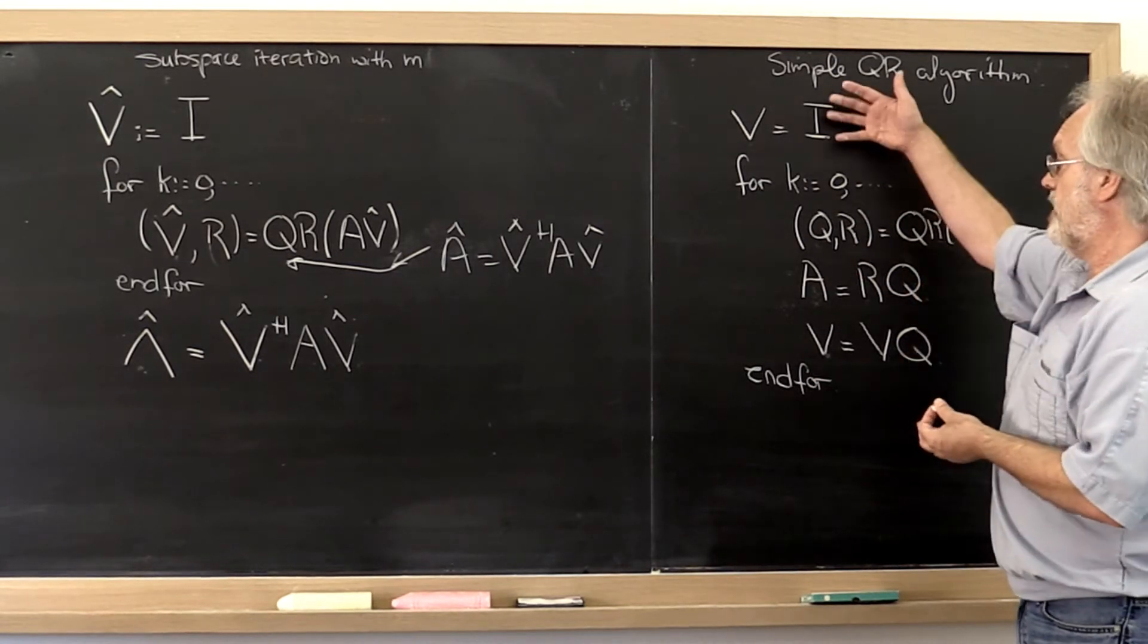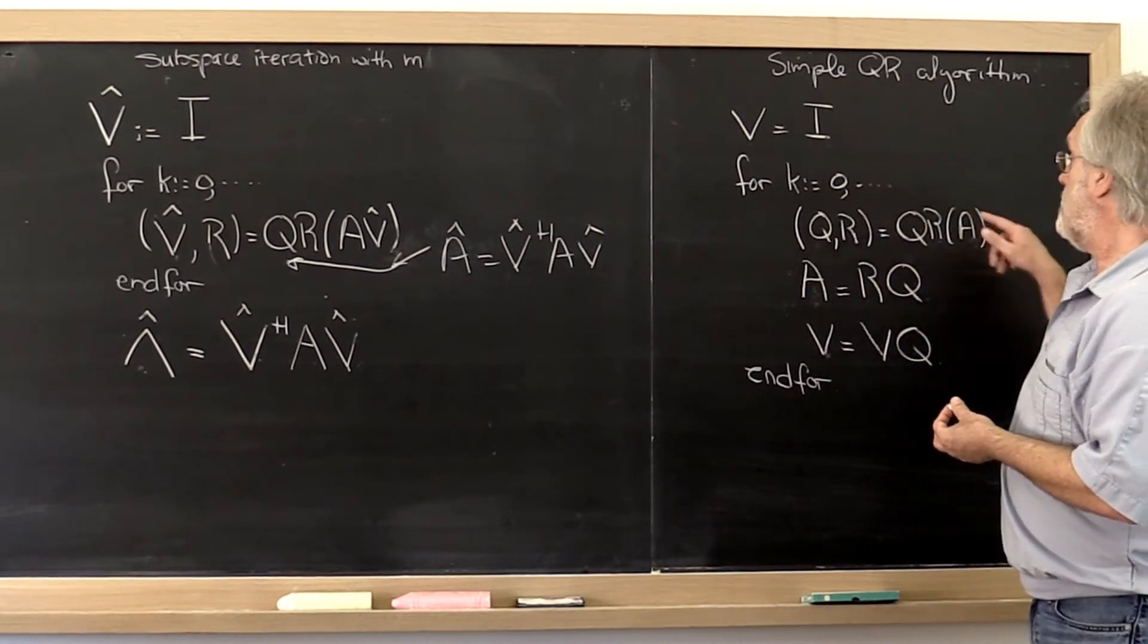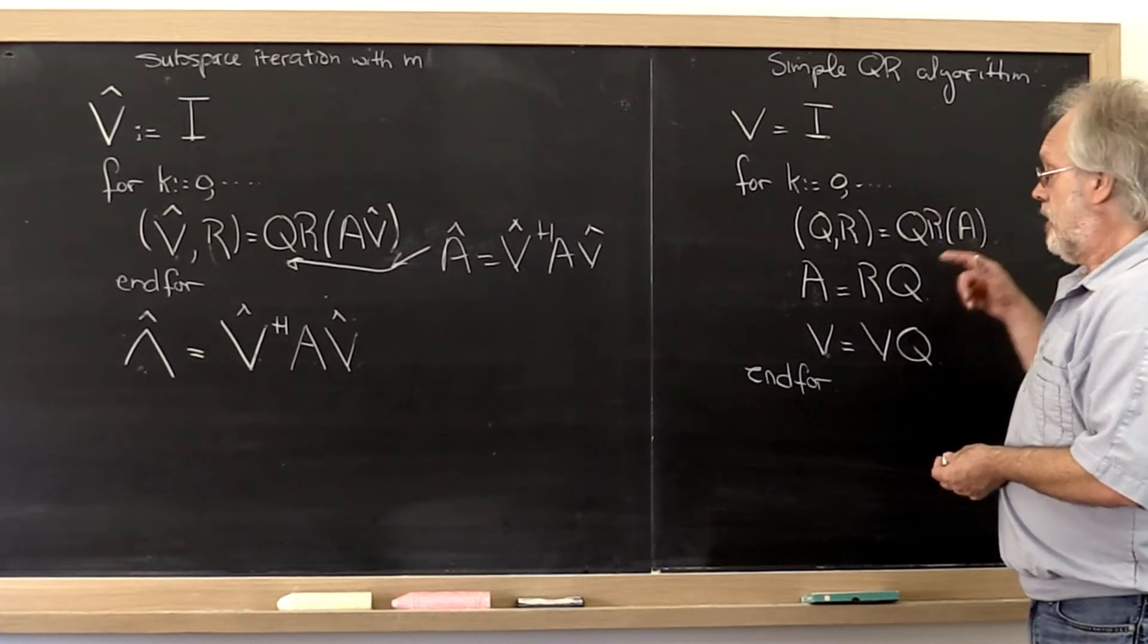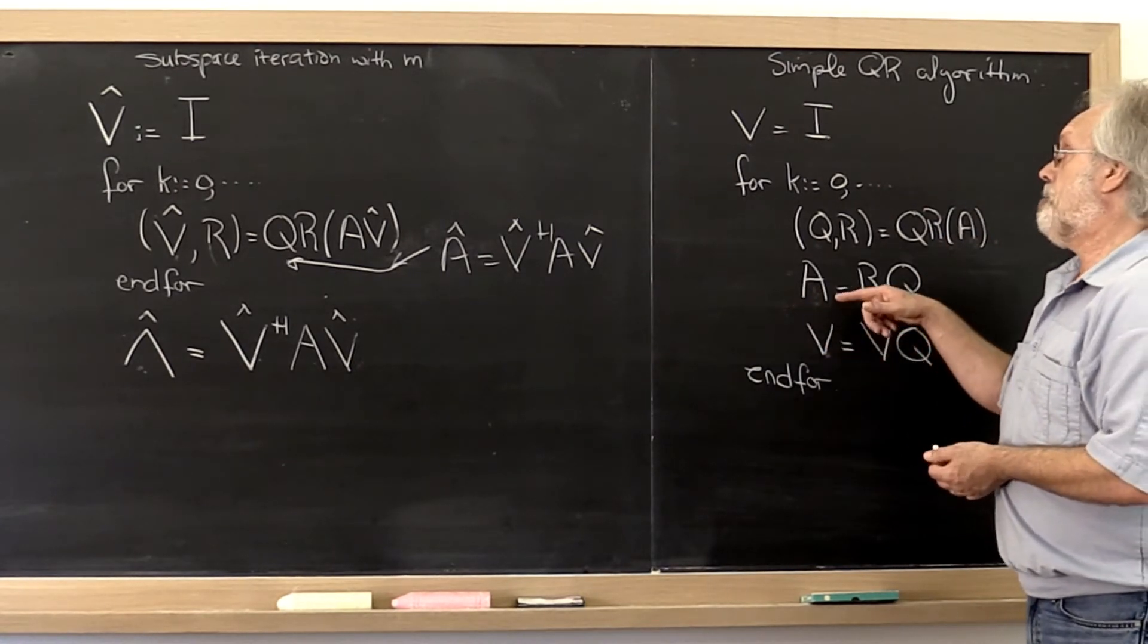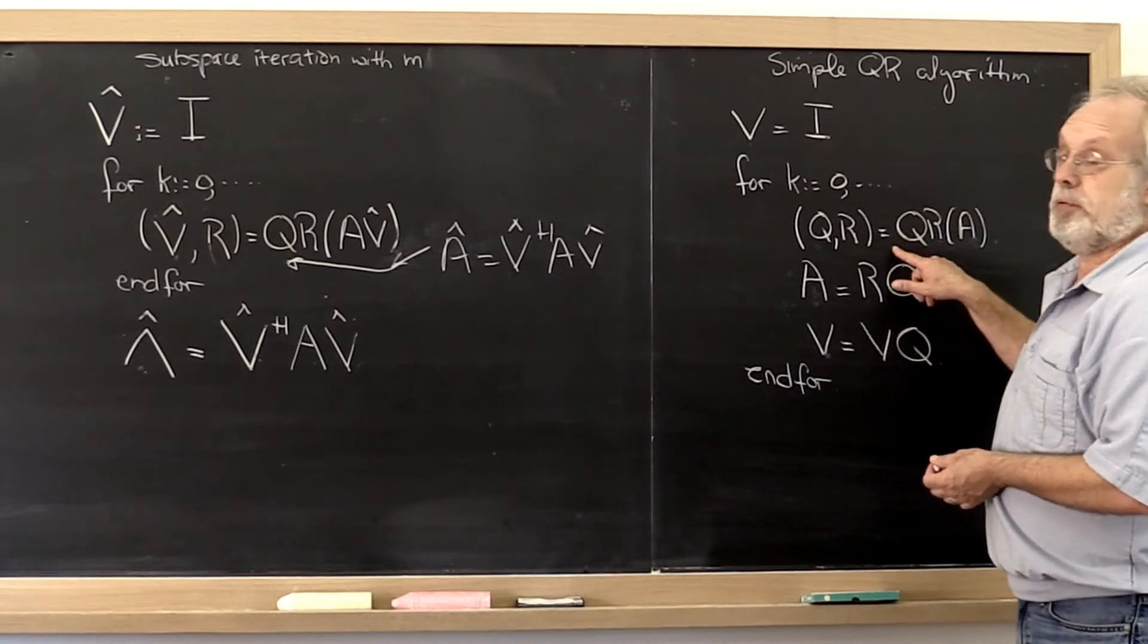So the idea is start with the identity, do one step of subspace iteration, adjust the basis in which you view it, do another step of subspace iteration.